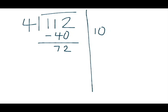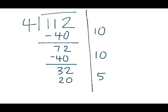I know there are at least 10 fours in 72 as well, so I do another partial quotient of 10. Again, 10 times 4 is 40. I write that underneath and subtract to get 32. Going smaller, the next easiest number I like to work with is 5. I know there are at least 5 fours in 32, so I write my 5 here. I multiply 5 times 4, getting 20, write it underneath the 32, and subtract: 32 minus 20 gives me 12.